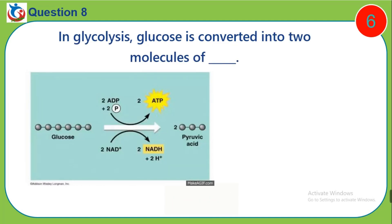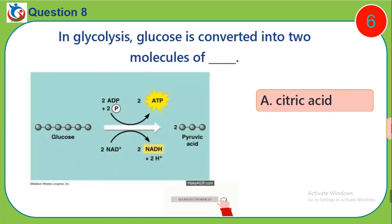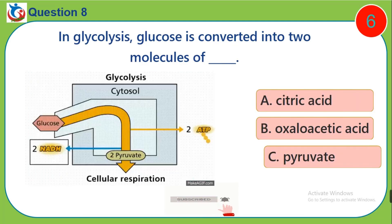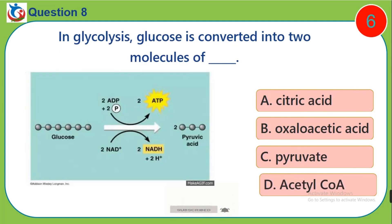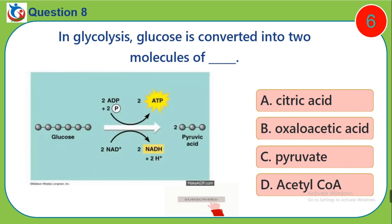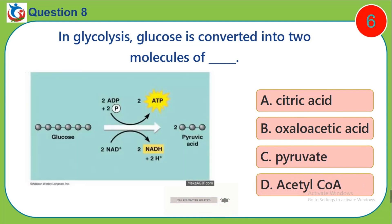Question 8. In glycolysis, glucose is converted into two molecules of: A. Citric acid. B. Oxygen. C. Pyruvate. D. Acetyl-CoA.